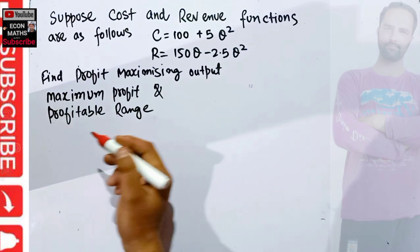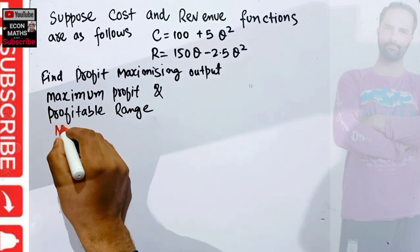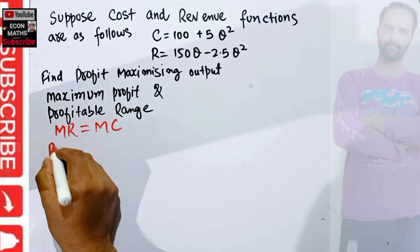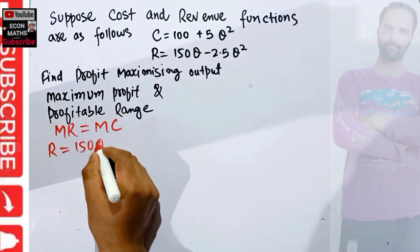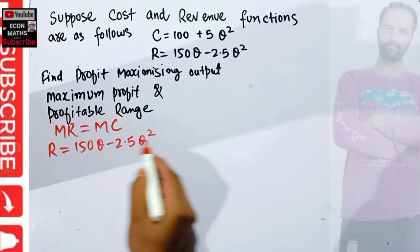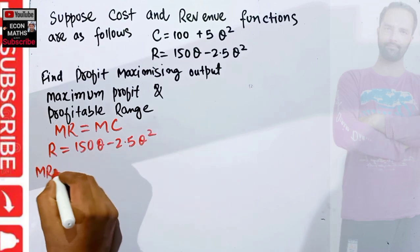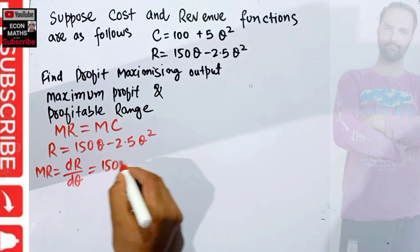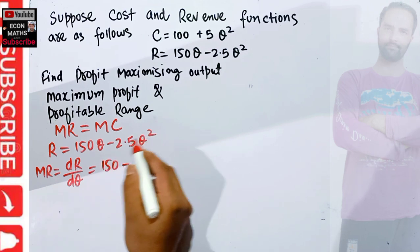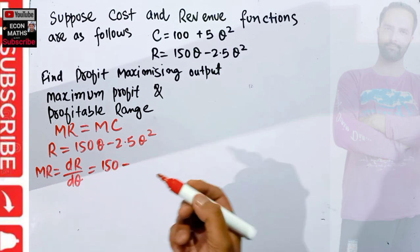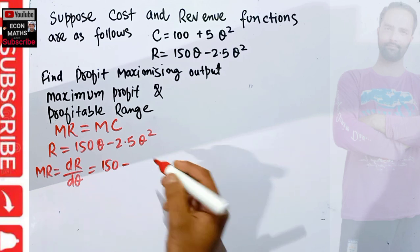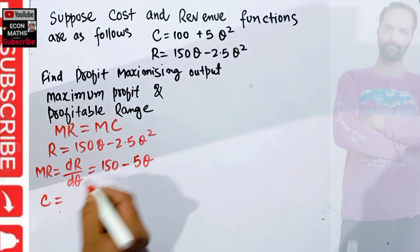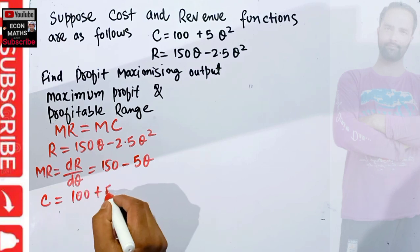Profit maximization requires that marginal revenue equals marginal cost. Our revenue function is R = 150Q − 2.5Q². To find marginal revenue, we take the derivative of the revenue function with respect to output. The derivative of Q is 1 and the derivative of Q² is 2Q, so 2 × 2.5 gives us 5Q. Therefore, marginal revenue MR = 150 − 5Q.